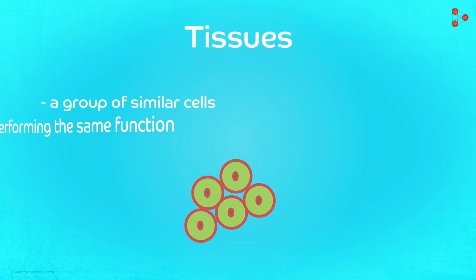We have had a good look at the concept of tissues. So how do we define them? In simple words, tissues are a group of similar cells performing the same function.